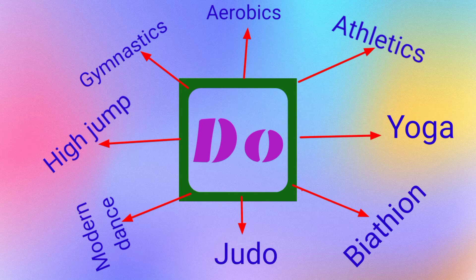For these we use do: do athletics, do trampoline, do high jump, do judo, aerobics, yoga. Do is used with sports that we do individually without a team or the use of a ball. We don't use any ball or bat in these.